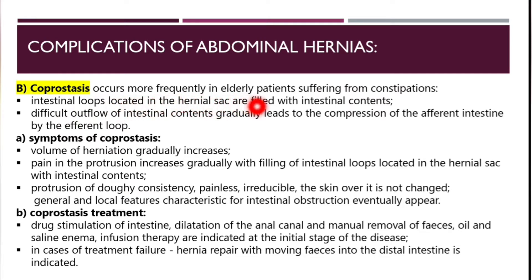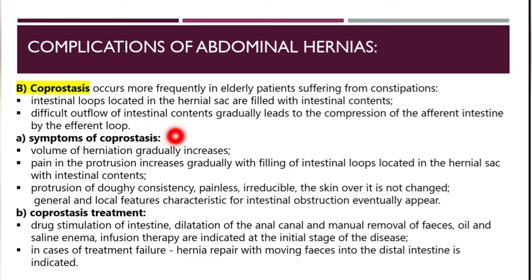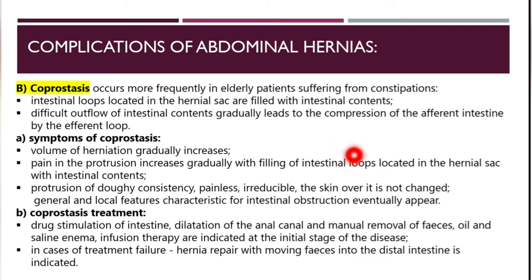Coprostasis occurs more frequently in elderly patients suffering from constipation. Intestinal loops located in the hernia sac are filled with intestinal contents, and difficult outflow of intestinal contents gradually leads to compression of the afferent intestine by the efferent lobe. Symptoms include gradual increase in the volume of the hernia sac and gradually increasing pain in the protrusion.